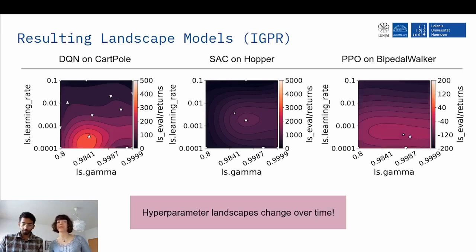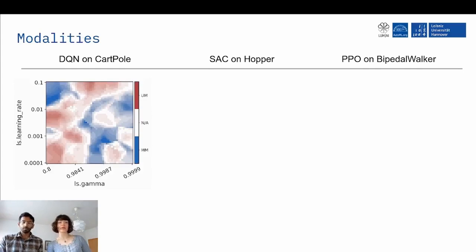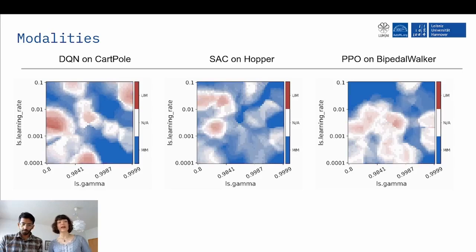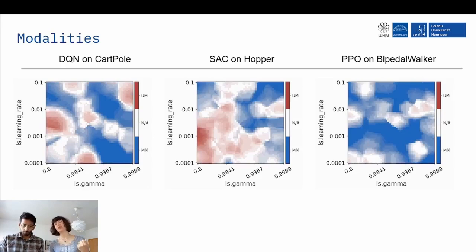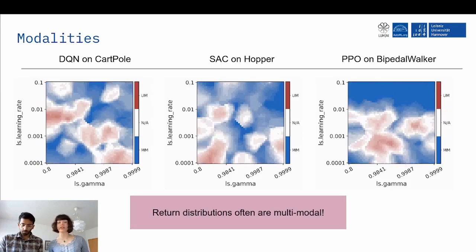So how do the modalities look like? We can now look at all three together because they tell the same story. Depending on the phase, we have multimodal and unimodal regions and we, at least as humans, don't see a direct pattern. All we can say is the return distributions often are multimodal.